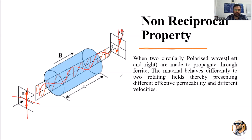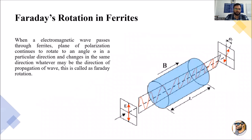The change in path or angle between the two circularly polarized waves is considered as theta. When an electromagnetic wave passes through ferrites, the plane of polarization continues to rotate to an angle theta. This change occurs in the same direction whatever may be the direction of propagation of the wave — this is the non-reciprocal property.